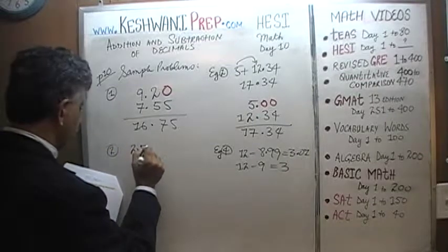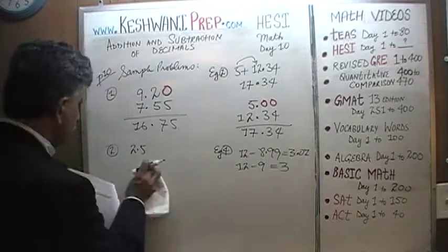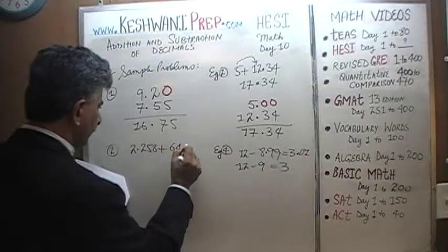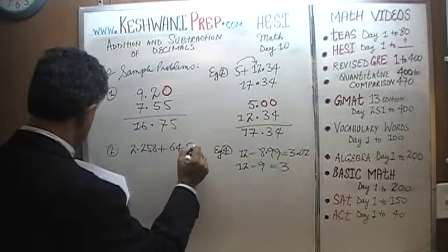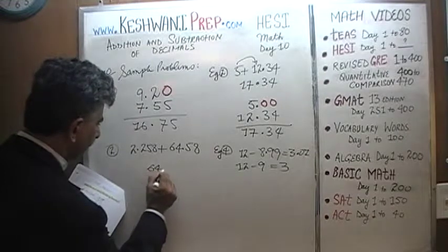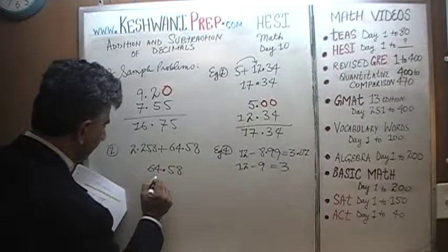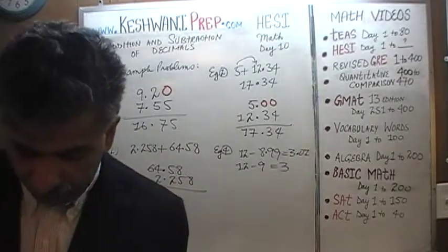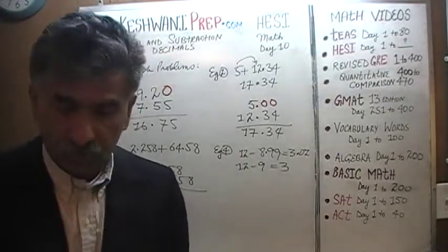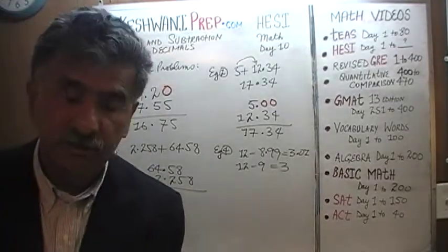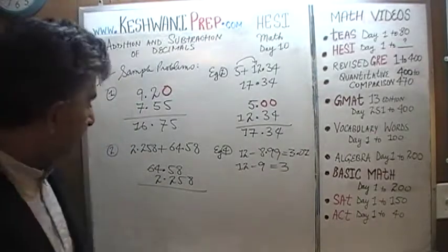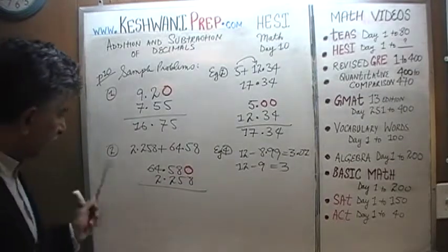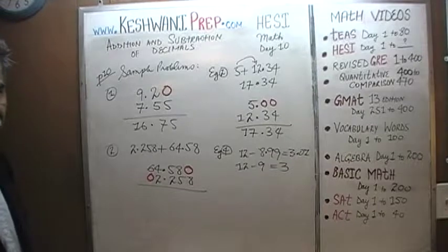Number 2: 2.258 plus 64.58. So we have 64.58 and we are adding 2.258 to it. This is the part where you have to pay attention. I keep repeating to keep track of your decimals and make sure all the digits line up properly. All the tenths digits have to be lined up, all the hundredths digits have to be lined up, and so forth. If you have an empty spot, stick in a 0 — it helps to see it.